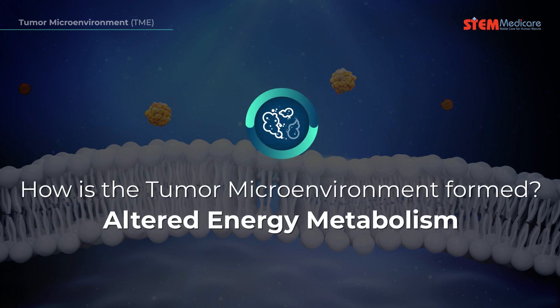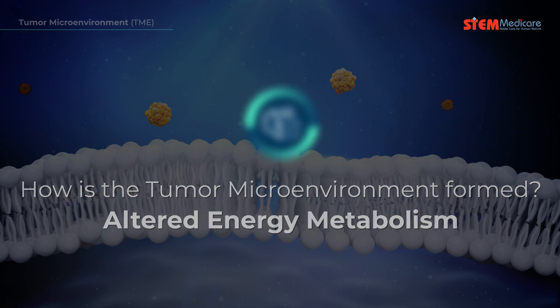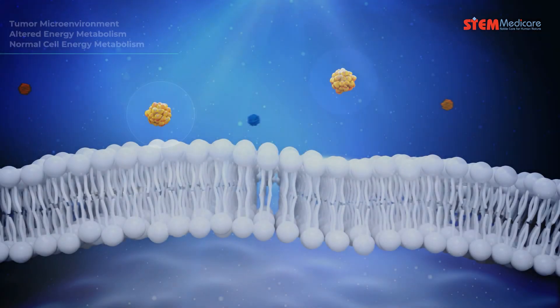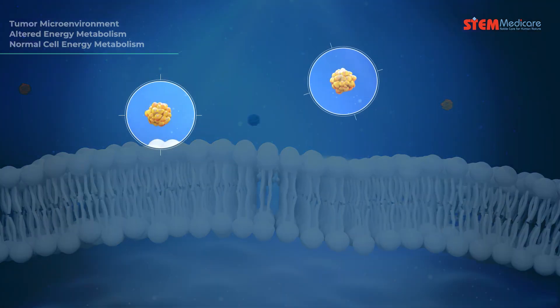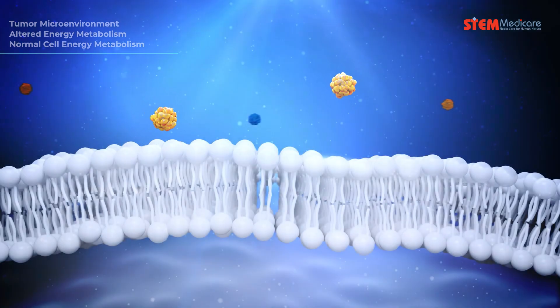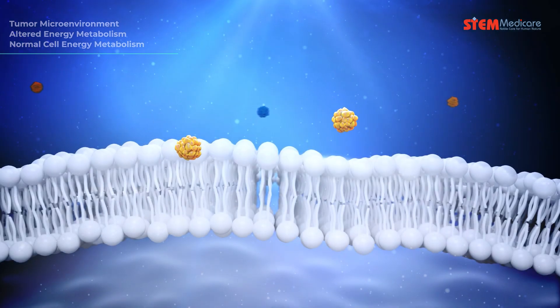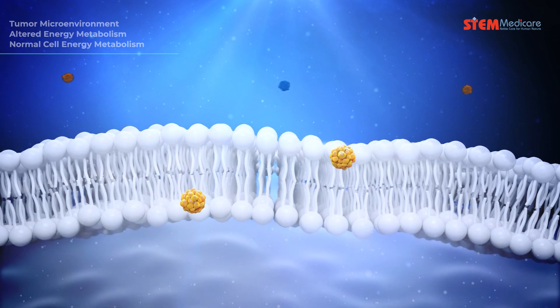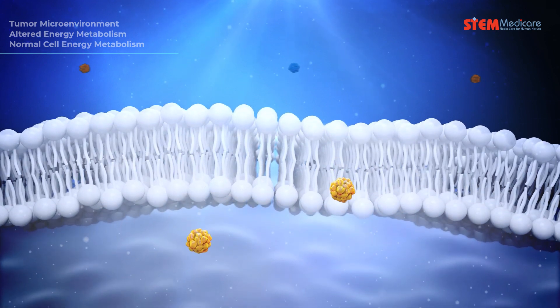How is the tumor microenvironment formed? The key is an altered energy metabolism in cancer cells. All cells take up glucose from blood vessels to make the energy needed for cell survival, called ATP. This process is called energy metabolism.